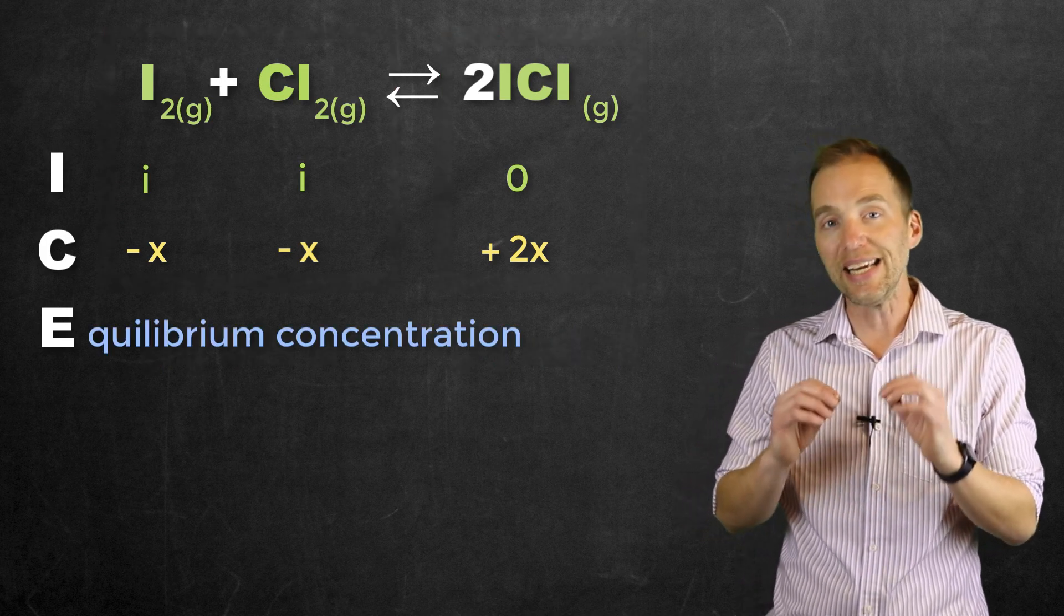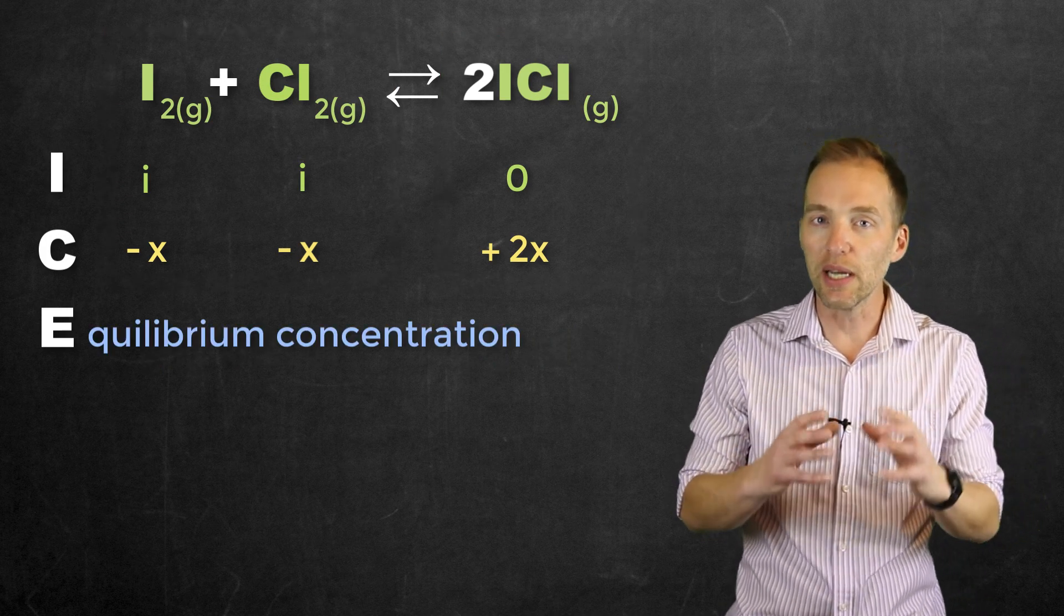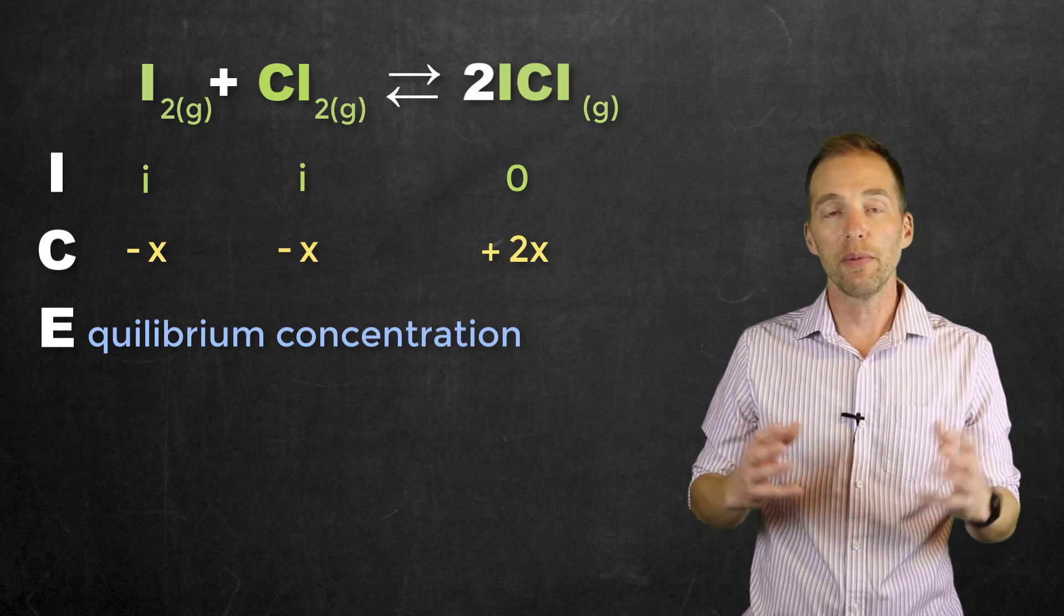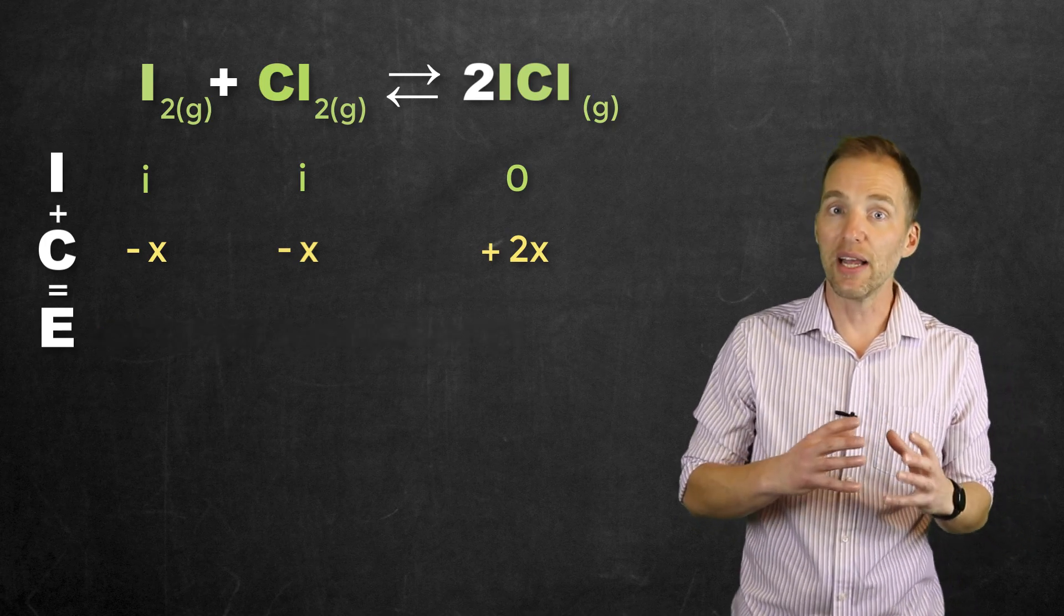And then finally, E of the ice table, the equilibrium concentrations, are just going to be represented by the sum of I and C.